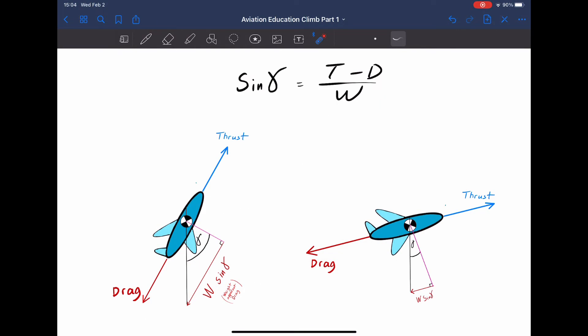Your climb angle is predicated on three variables. So you could have a very steep climb angle if you had a lot of thrust. Also, you could have a very steep climb angle if you reduce your weight. And thirdly, you can also increase your climb angle if you minimize your drag.